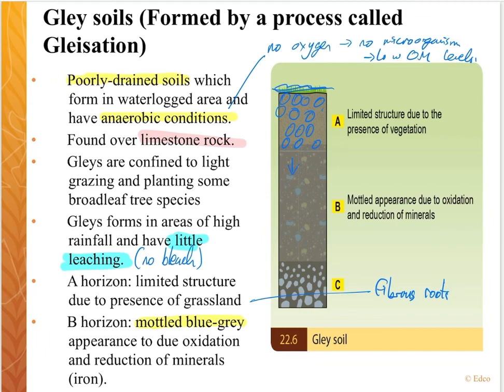The mottled blue-gray appearance is due to the oxidation and reduction of minerals. Oxidation and reduction basically refers to the addition of oxygen or the removal of oxygen.